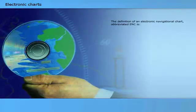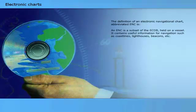The definition of an electronic navigational chart, abbreviated ENC, is: an ENC is a subset of the ECDB held on a vessel. It contains useful information for navigation, such as coastlines, lighthouses, beacons, etc.